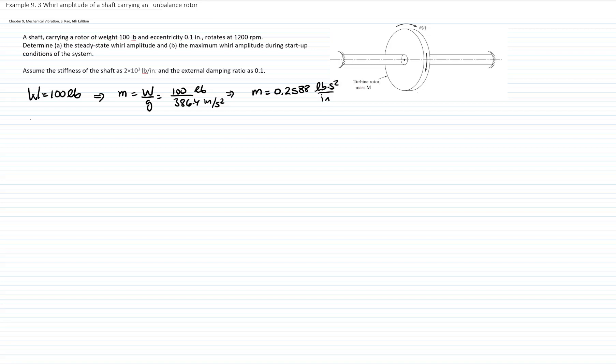They tell us that the eccentricity, and I will call the eccentricity A, equals 0.1 inches. We have an operating velocity of 1200 RPM, which is 1200 times 2π over 60, that gives me an operating velocity of 125.66 radians per second.